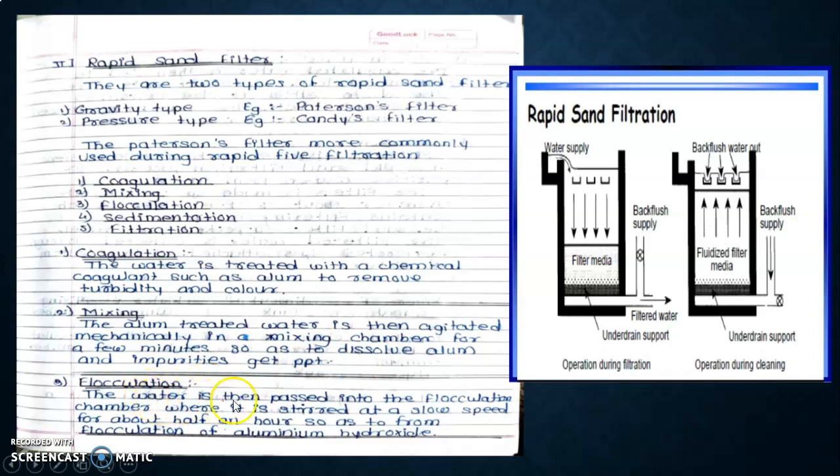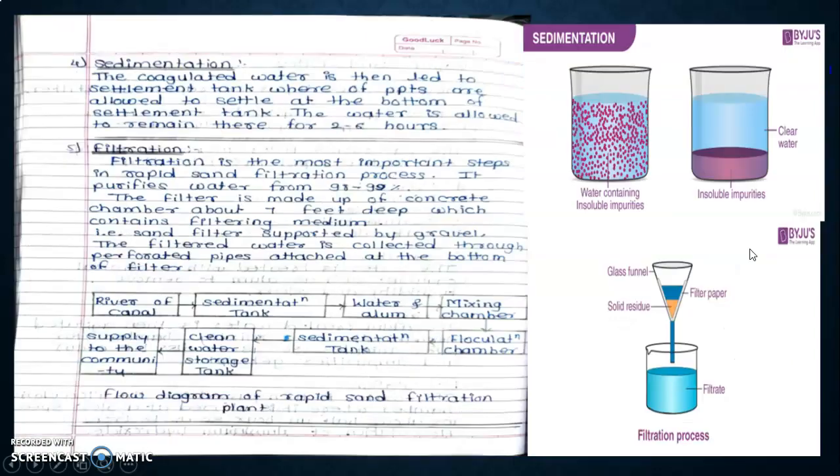Flocculation: the water is then passed into the flocculating chamber where it is stirred at slow speed for about half an hour to form flocculation of aluminum hydroxide.